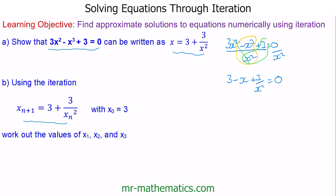Now we move the negative x to the right-hand side, so x = 3 + 3/x². We've shown that this iteration formula will solve this equation.